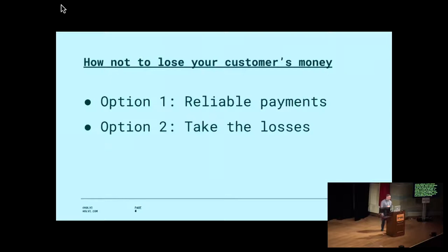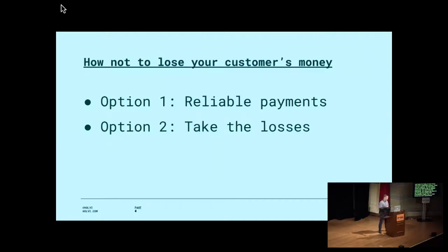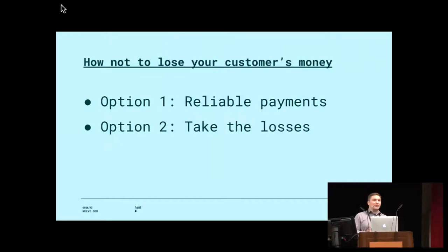My subtopic for today is how not to lose your customers' money. There are two options. The first option is reliable payments - you don't lose payments, they always go through the system, and everybody's happy. But in case there's an error and you lose a message or have a bug, it's not that you lose your customers' money - you actually lose your own money. In the worst case you can double-execute the payment, send 1,000 euros twice, and it's often impossible to get the money back. Banks take the losses themselves rather than passing them to customers.